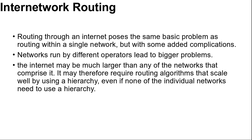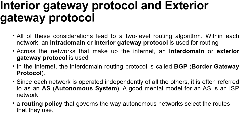All of these considerations lead to a two-level routing algorithm. Within each network, an intra-domain or interior gateway protocol is used for routing — it might be a link state protocol of the kind already discussed. Across the networks that make up the internet, an inter-domain or exterior gateway protocol is used. The networks may all use different intra-domain protocols, but they must use the same inter-domain protocol.